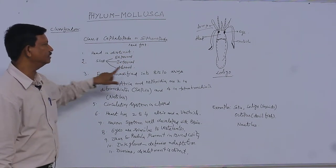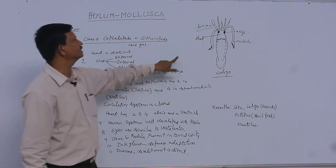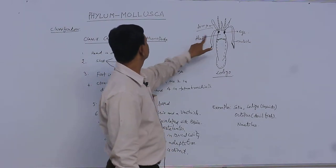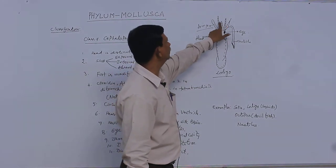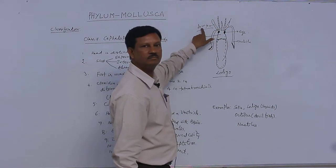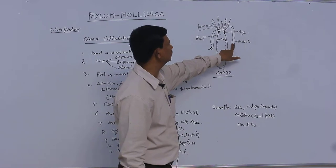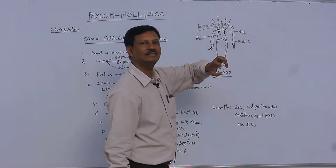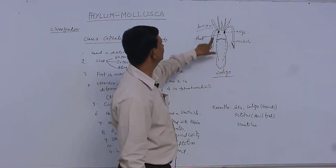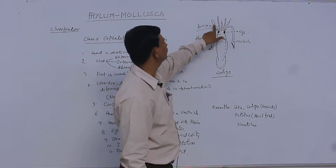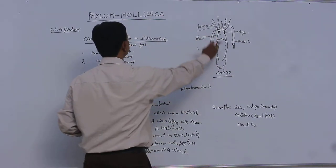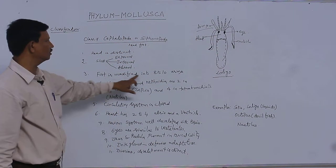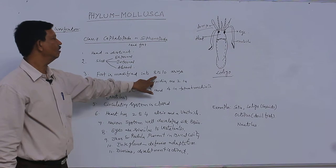The foot is modified into 8 to 10 arms. Here you can see these are the head and foot. The foot is modified or divided into arms. They possess suckers also. With the help of the suckers, it is attached to organisms. These suckers are present around the arm. The foot is divided into arms, and they possess suckers.